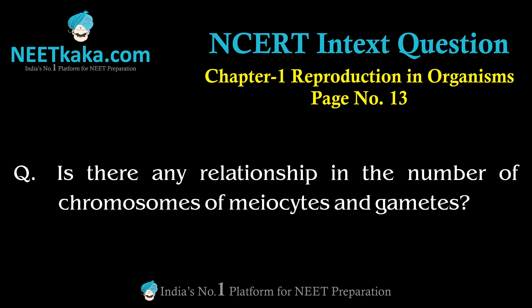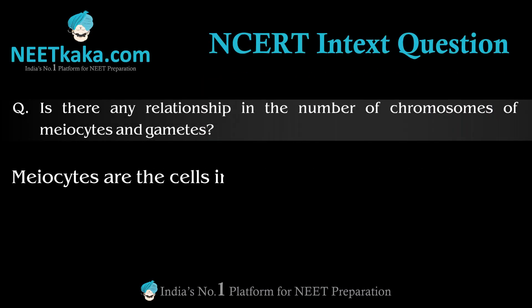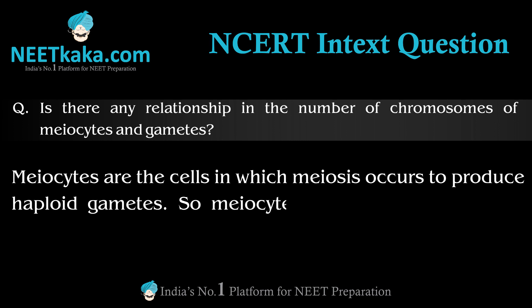The relationship is that meiocytes are the cells in which meiosis occurs to produce haploid, or n number of, gametes. So we can say that meiocytes are diploid.